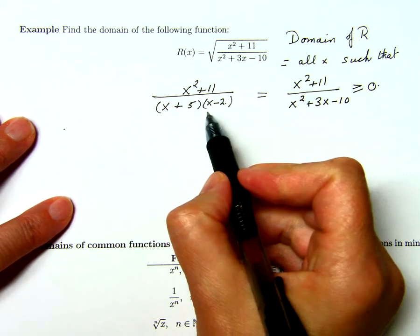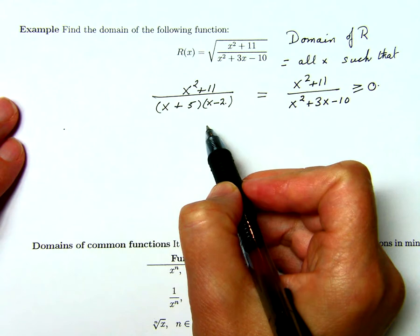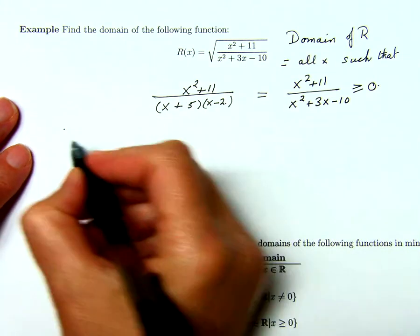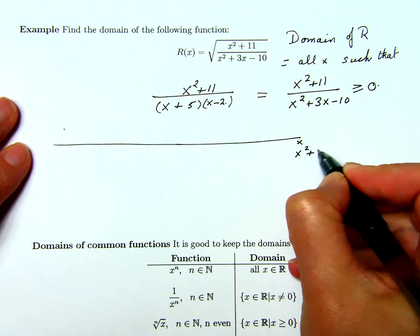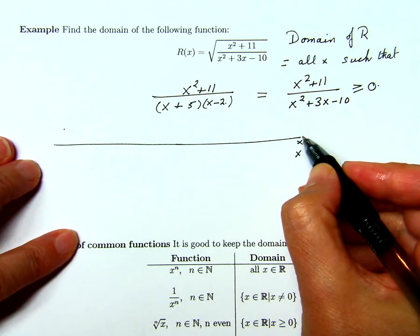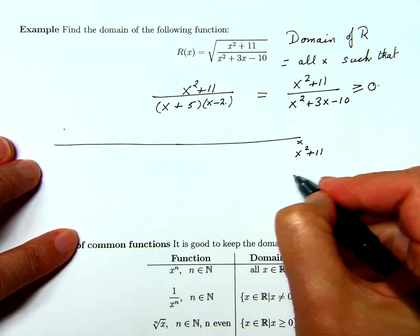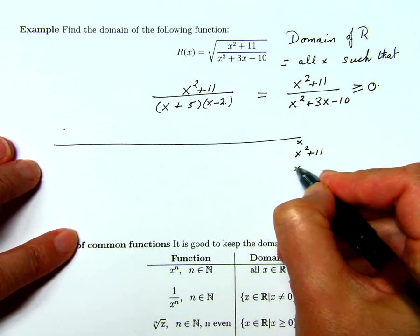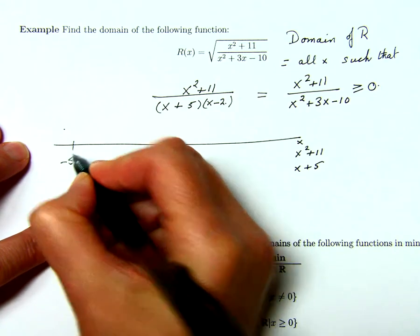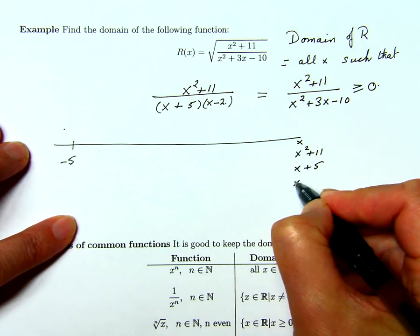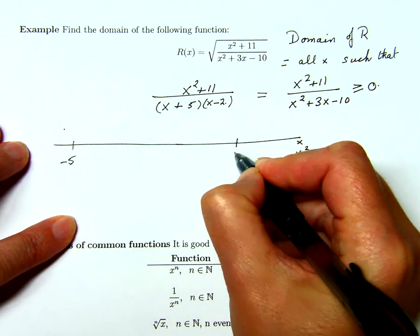Okay, this is factored, and now we have to figure out where these factors change sign, and x squared plus 11 will never change sign because it has no zeros, so that's always going to be positive. x plus 5 will change sign way back here at negative 5, and x minus 2 will change sign at 2.